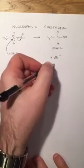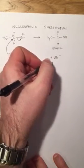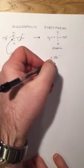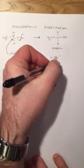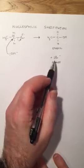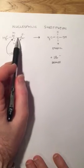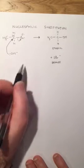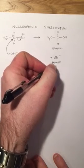It is useful to draw on the lone pair of electrons to indicate to yourself and the examiner that you understand that this bond has broken heterolytically, but it is not required for the mark in the exam. And that is quite simply the hydrolysis of a bromoalkane.